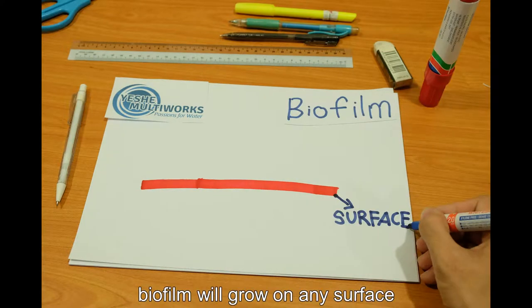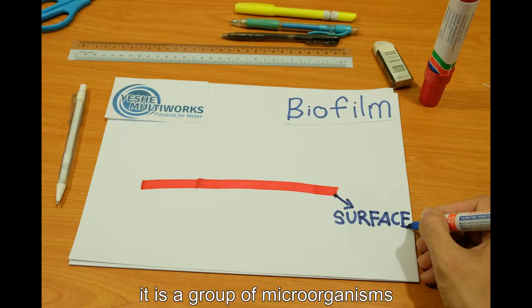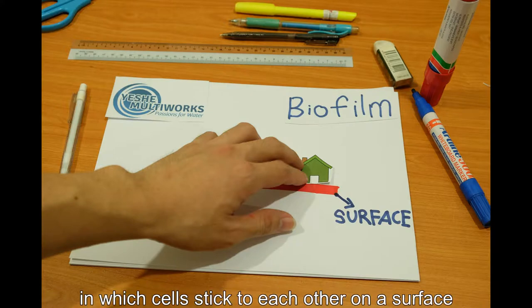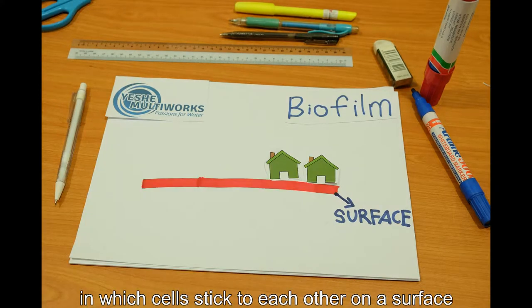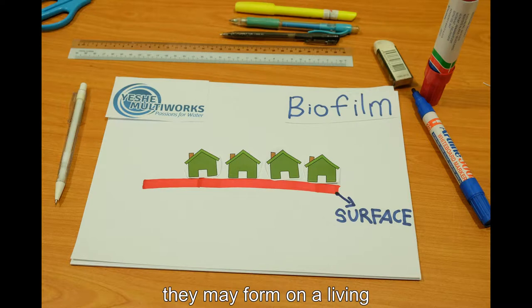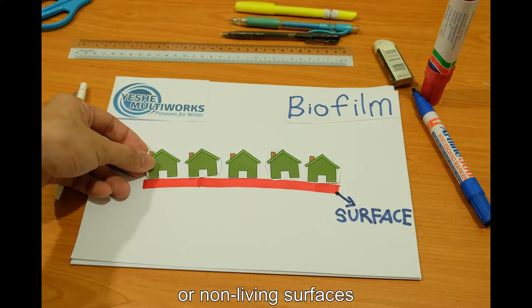Biofilm will grow on any surface. It is a group of microorganisms in which cells stick to each other on the surface. They may form on living or non-living surfaces.